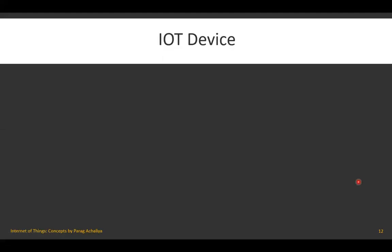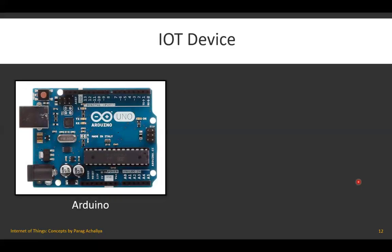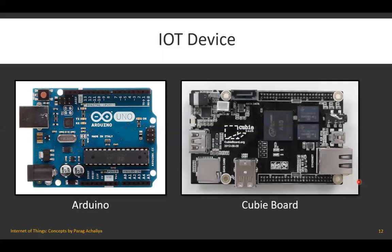That covers the Raspberry Pi IoT device. Another very popular IoT device is the Arduino, which is widely used in industries and IoT applications, and is very simple to use.